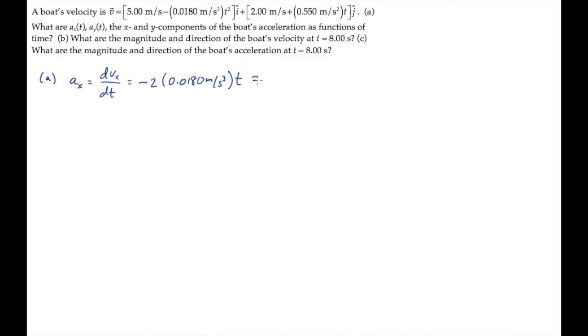Follow the rules for taking the derivative of a polynomial to see that ax equals minus 0.0360 meters per second cubed multiplied by the time t.